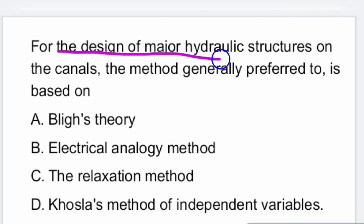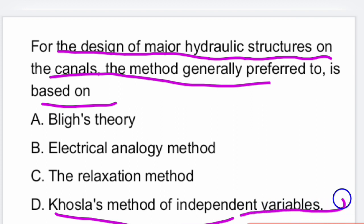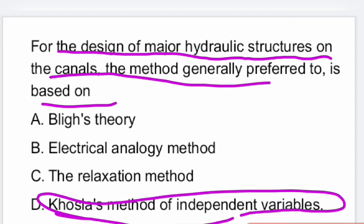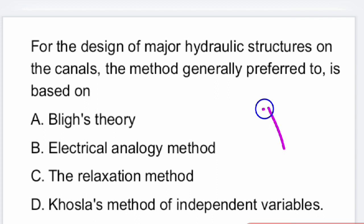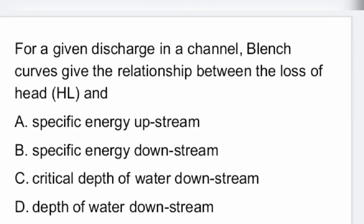For the design of major hydraulic structures on the canals, the method generally preferred is the cost-loss method of independent variables — that is option D is the right answer.